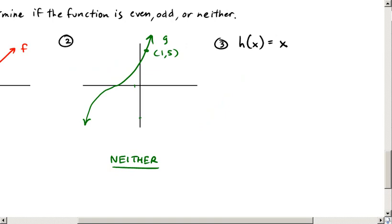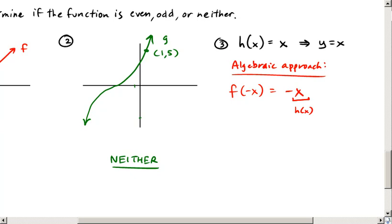So I'm going to start this one with an algebraic approach, just so you can see one that has that. So the question is, what does f of negative x equal? Well, it of course equals negative x. And since x is h of x, this is equal to negative h of x. And I sort of ninja corrected the name of my function there. So again, h of negative x is equal to negative h of x. So this is an odd function.